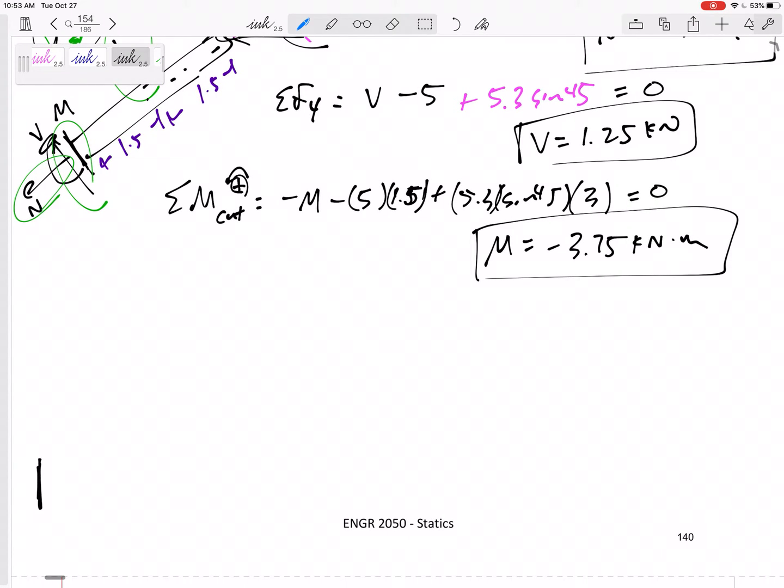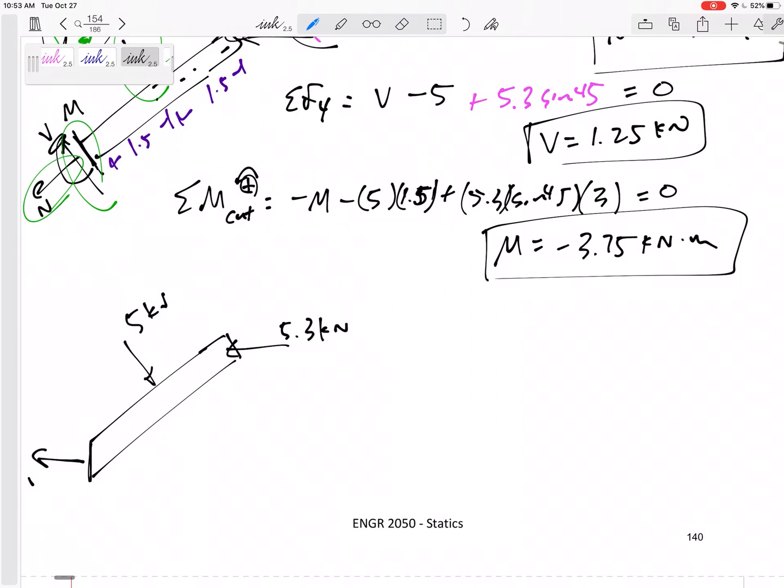Let's draw this. So, here's my cut. There's my cut. All right, I still have 5.3 kilonewtons right there I still have the 5 kilonewtons right there. Now, N is always out of the cut perpendicular to the cut so now my N would be that direction. I think that's going to change my N isn't it? Now my V would be that direction I think these might change now my M is going to be that direction.